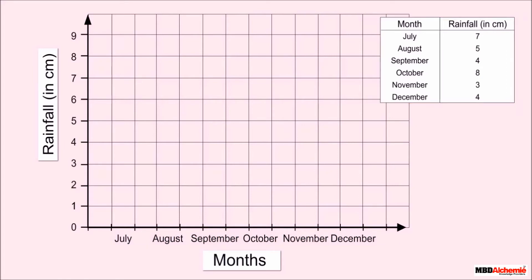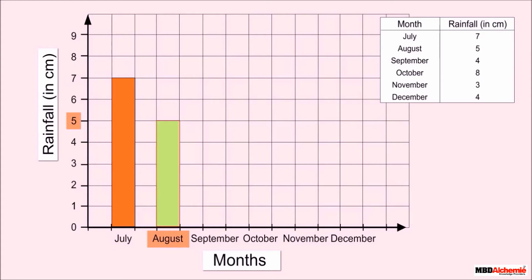Now shade the bars according to the data given in the table. The month of July receives seven centimeters of rainfall, so we shade the boxes up to seven. The month of August receives five centimeters of rainfall, so we shade the boxes up to five. The month of September receives four centimeters of rainfall, so we shade the boxes up to four.